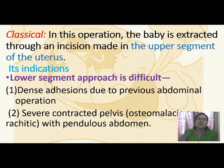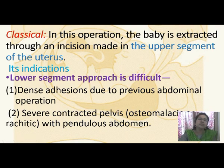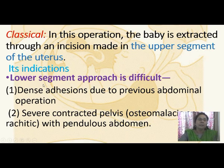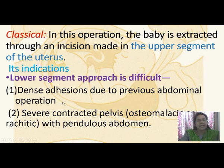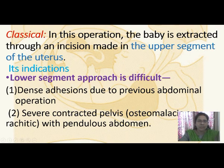Classical caesarean section: the baby is extracted through an incision made in the upper segment of the uterus. It is not commonly practiced, but sometimes we have to use the upper or classical approach when the lower segment approach would be difficult. The main indication is dense adhesions due to previous abdominal surgery. Severe contracted pelvis such as osteomalacic or rachitic pelvis with a pendulous abdomen also necessitates the upper segment approach.